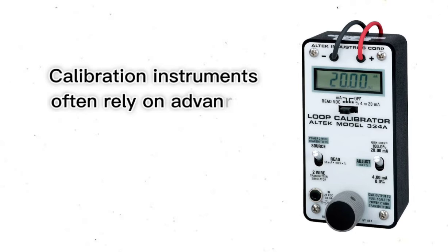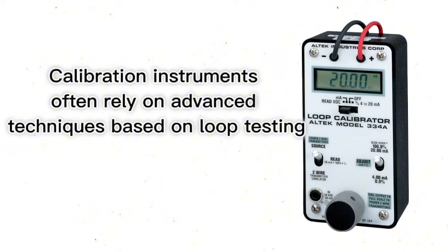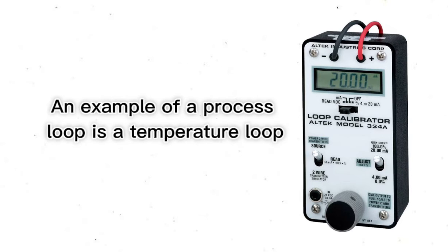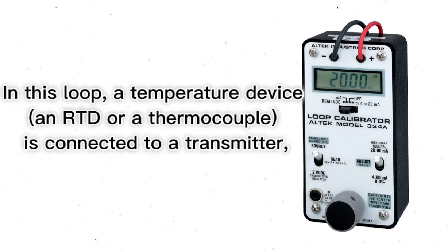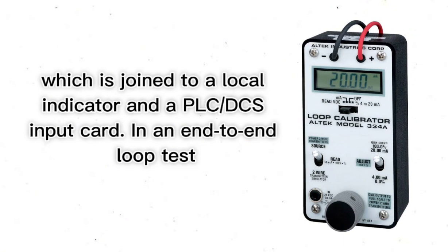Calibration instruments often rely on advanced techniques based on loop testing. An example of a process loop is a temperature loop. In this loop, a temperature device — an RTD or a thermocouple — is connected to a transmitter, which is joined to a local indicator and a PLC or DCS input card in an end-to-end loop test.